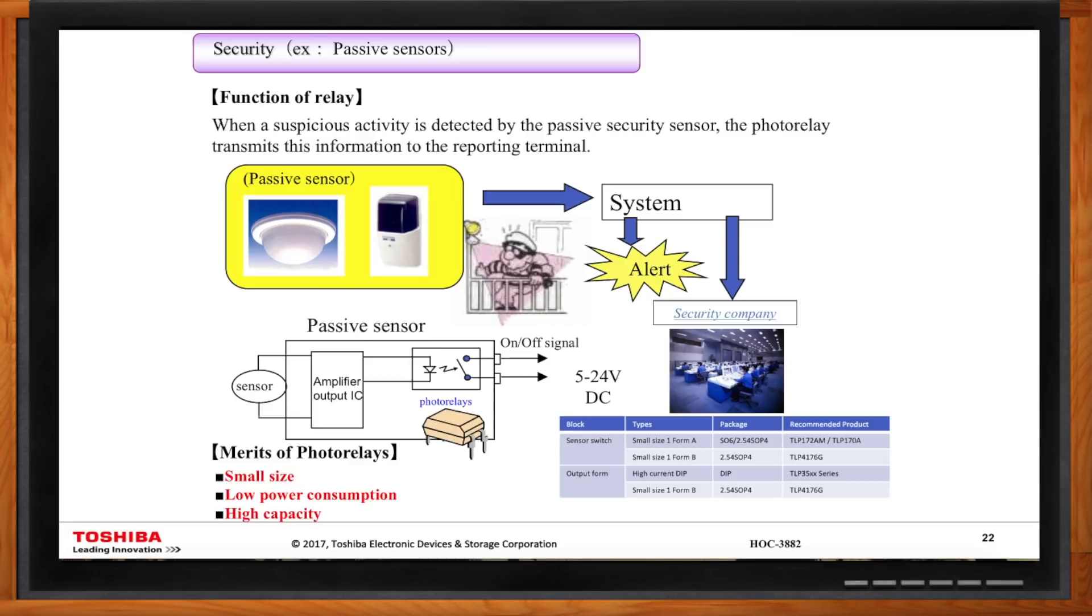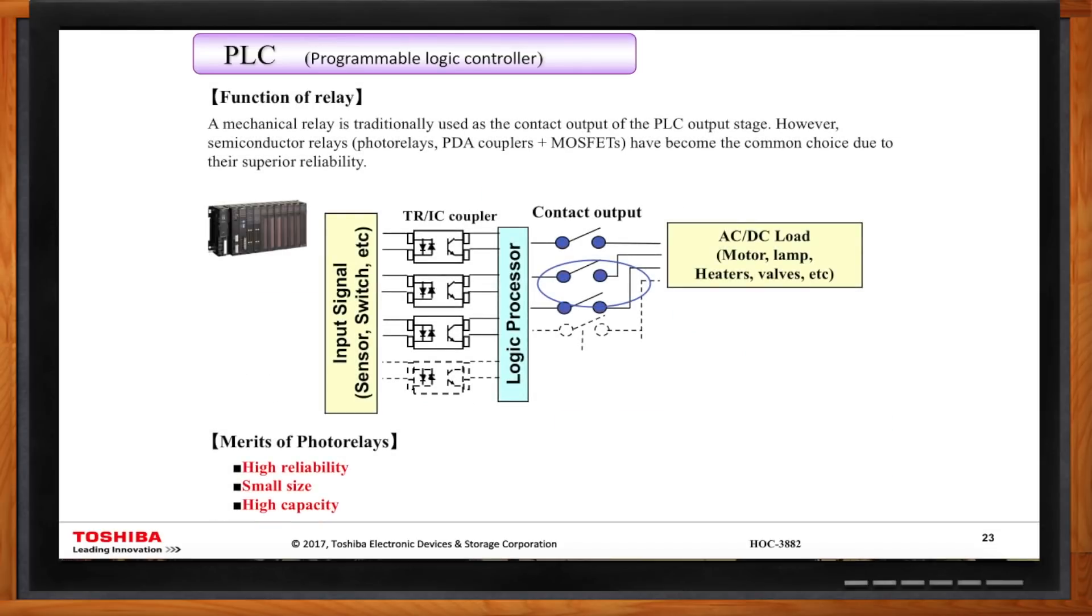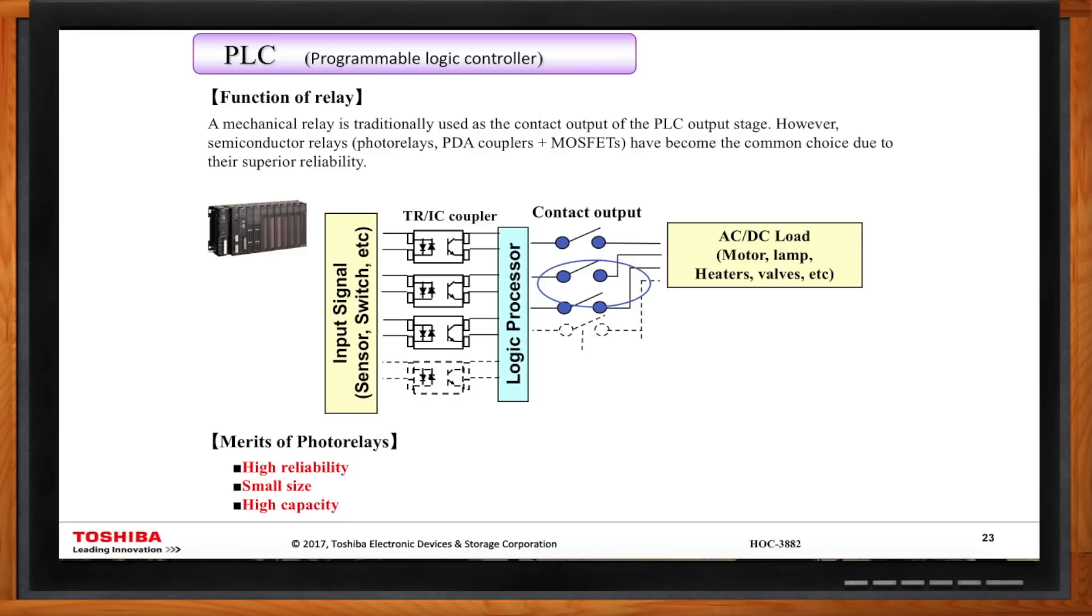Another application example would be security or passive sensor. Once again, low power consumption is important, so photo relays that have low input current type of features will be important, and Toshiba can support you in this area. And last but not least, a very popular application would be like a programmable logic controller. Once again, photo relay can address that. Now, it sounds like there are a ton of high current applications. What photo relays does Toshiba have for those? It seems like there needs to be a whole bunch of options.